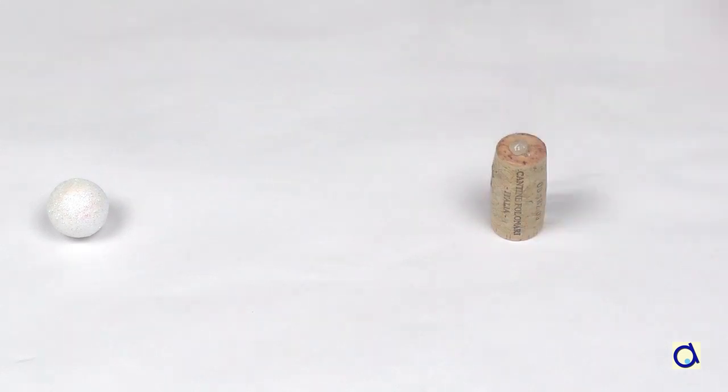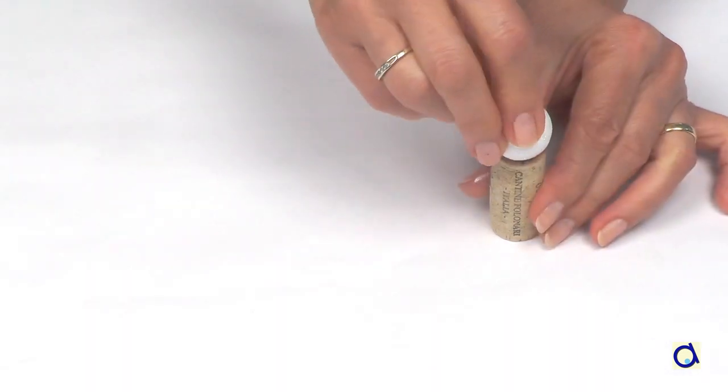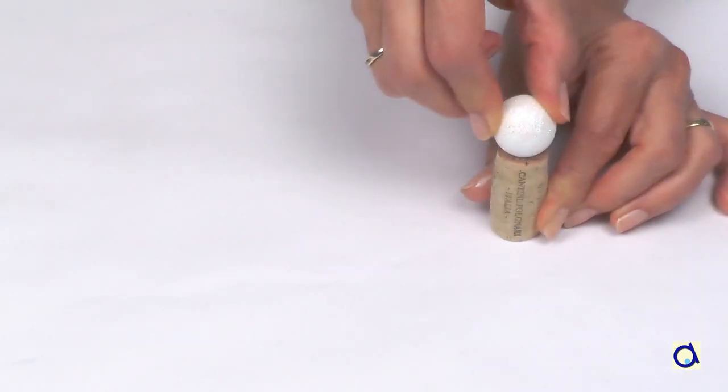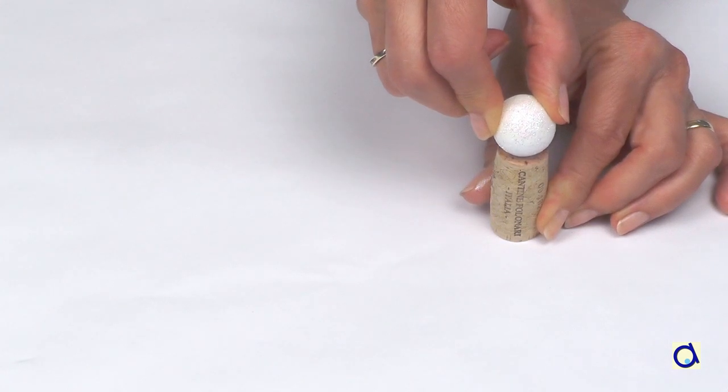Take a cork and put a dot of hot glue on one of the flat sides. Glue a small styrofoam ball to the cork.